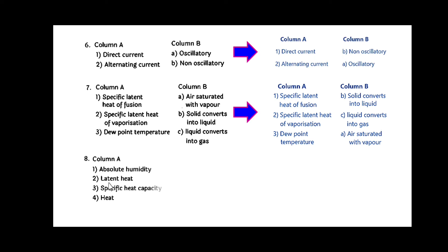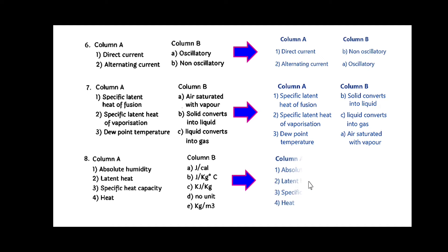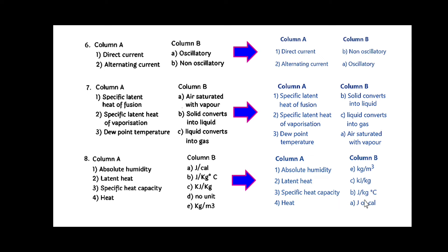Eight: column A gives absolute humidity, latent heat, specific heat capacity, and heat. Column B gives their units. The answers are: absolute humidity is measured in kg per meter cubed; latent heat in kilojoule per kg; specific heat capacity in joule per kg degree Celsius; and heat in joule or calorie.